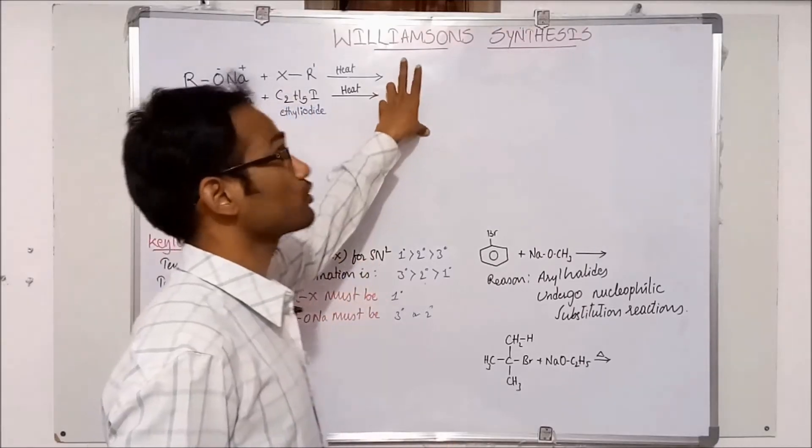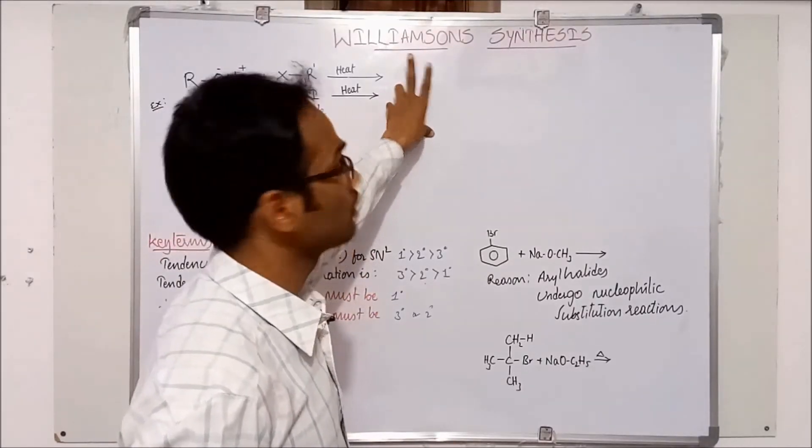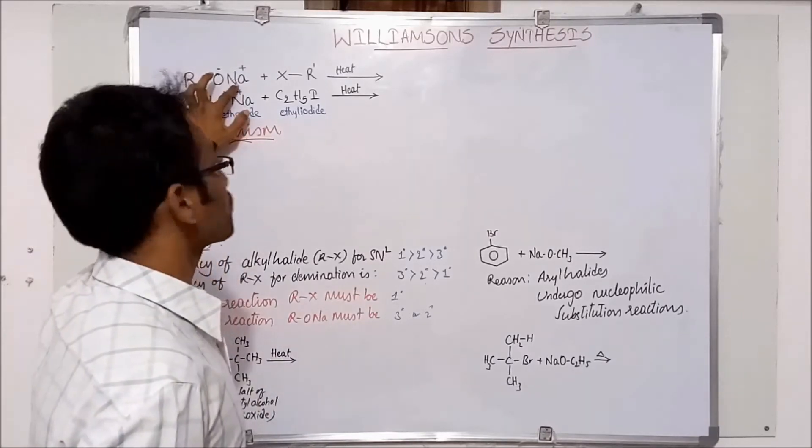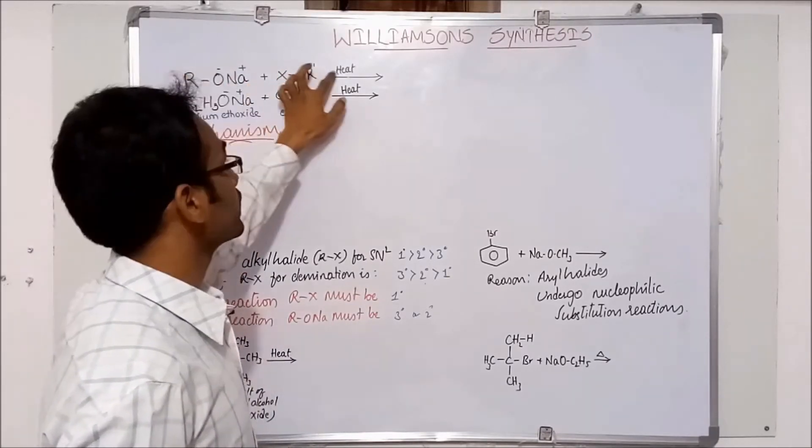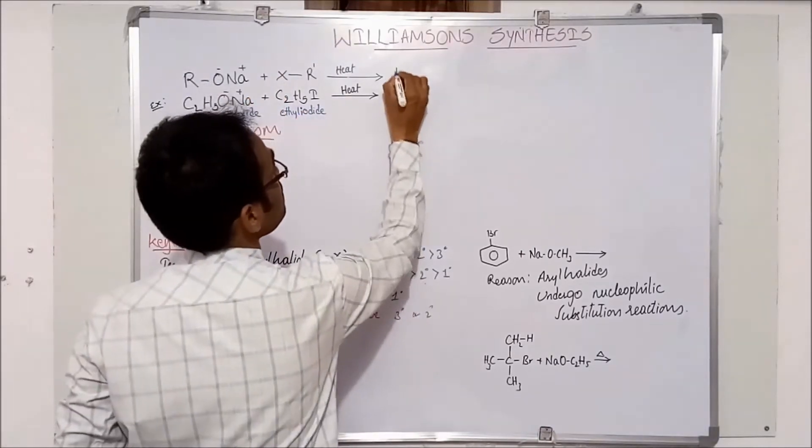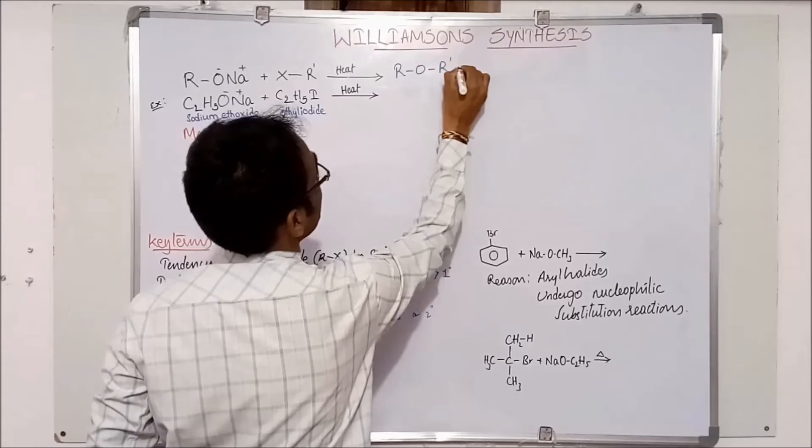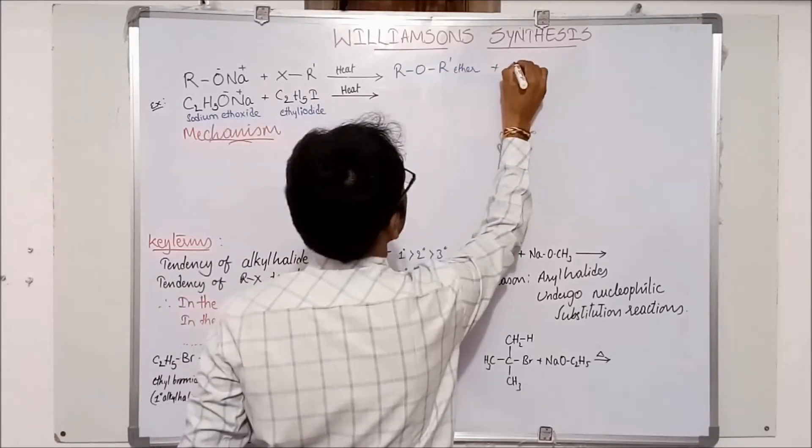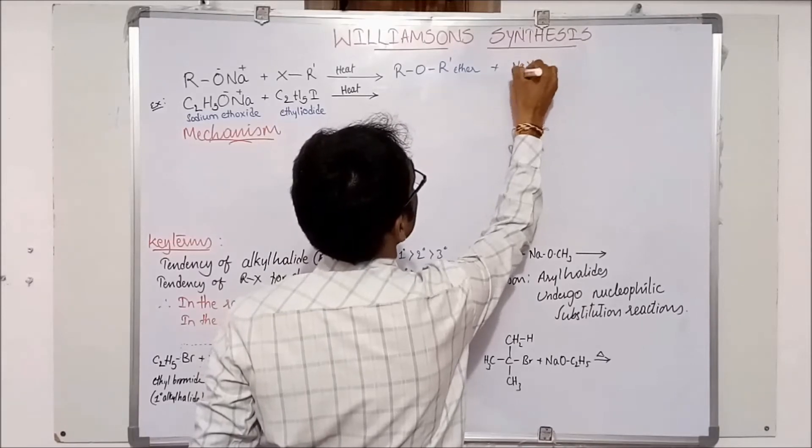Today let us discuss about Williamson's synthesis. In Williamson's synthesis, sodium or potassium alkoxides on heating with alkyl halides gives ethers and this is ether with a by-product of sodium halides.